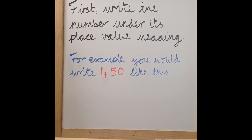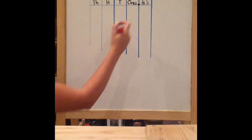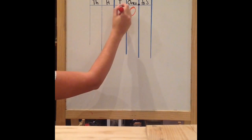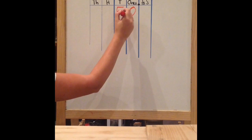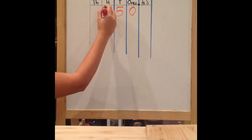First, write the number under its place value heading. For example, you would write 450 like this: put your 0 in your 1's column, your 5 in your 10's column, and your 4 in your 100's column.